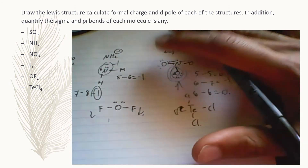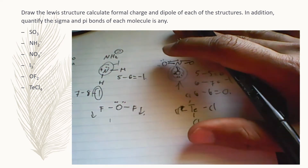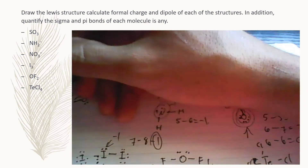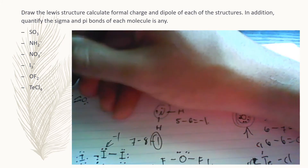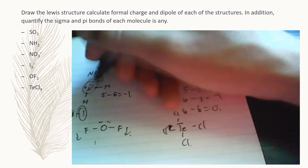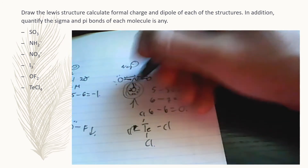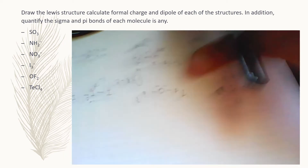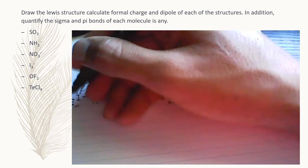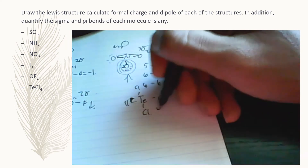Now let's figure out the number of sigma and pi bonds. For SO3, you're going to have three sigma bonds and three pi bonds — three double bonds and three single bonds. For NH2⁻, we have two sigma bonds. For NO3⁻, three sigma bonds and two pi bonds. For I3⁻, two sigma bonds; for OF2, two sigma bonds; and for TeCl4, four sigma bonds.